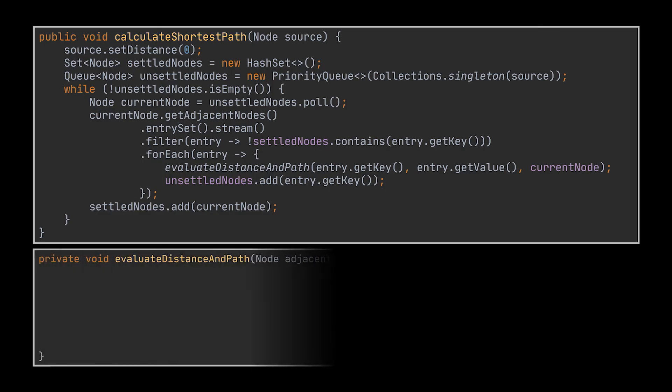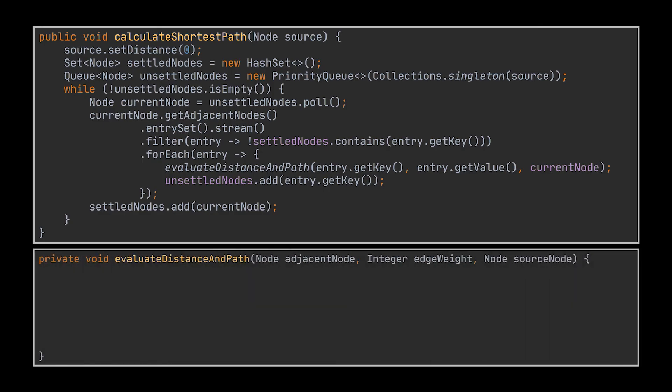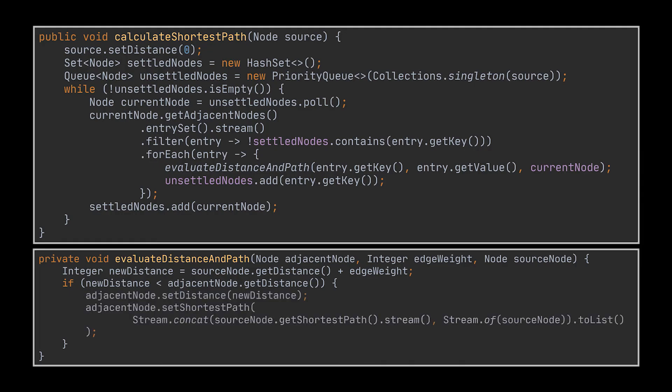Let's take a look now at this evaluateDistanceAndPath helper method we made use of inside the for loop. We previously mentioned that we need to compare the sum of the edge weight and the distance of the source node it connects to the destination's distance, and that is exactly what we are doing here. Now if the distance calculated is smaller than that of the node we are trying to reach, then we found a smaller, a more optimal path linking this node to the source. So we update the distance and the path to reflect what we just calculated.